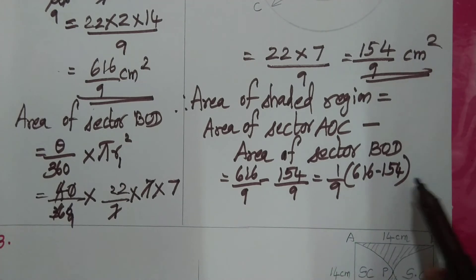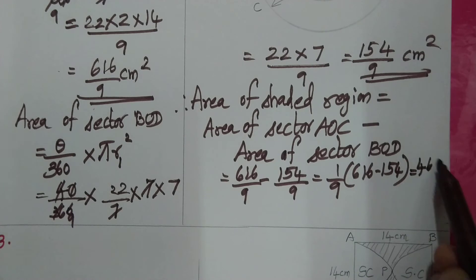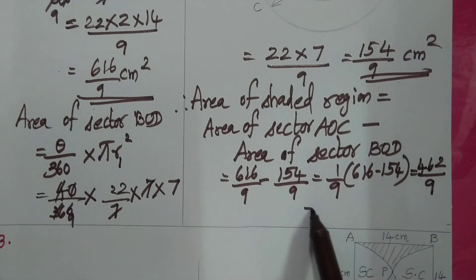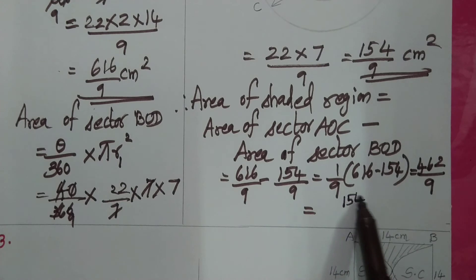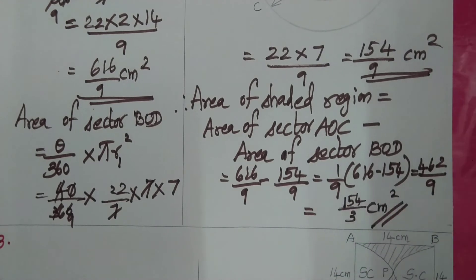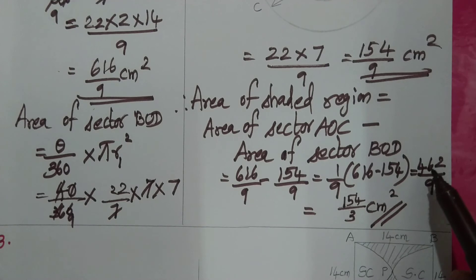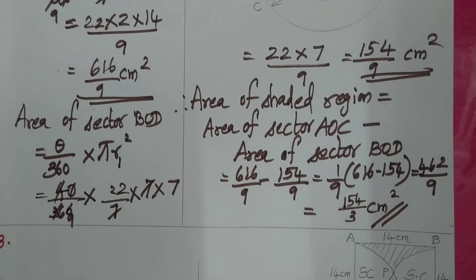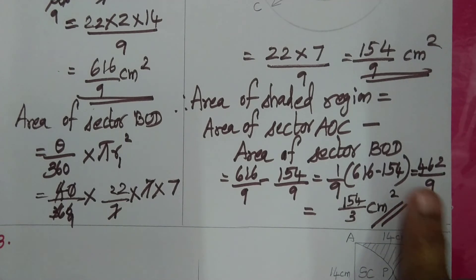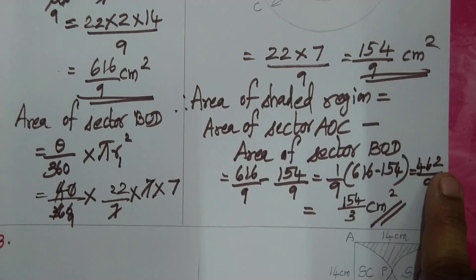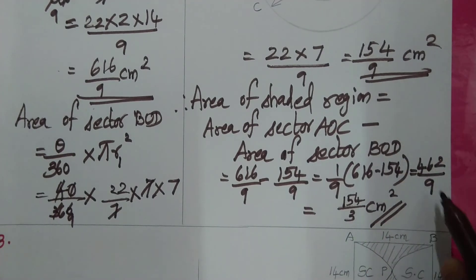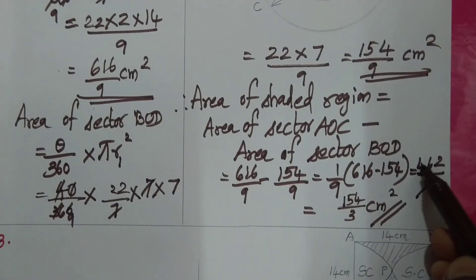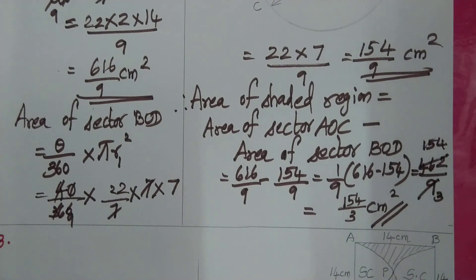Reducing 462 by 9: dividing both by 3 gives 154 by 3. We can verify 462 is divisible by 3 because the sum of digits is 4 plus 6 plus 2 equals 12, and 12 is divisible by 3. So the final simplified answer is 154 by 3 cm².